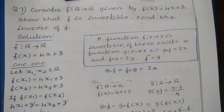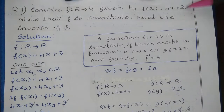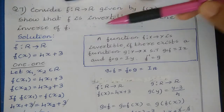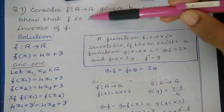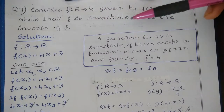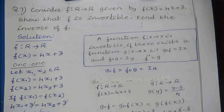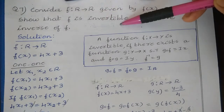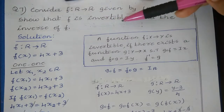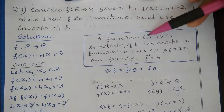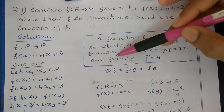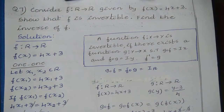Question number 7. Consider f is a function defined from R to R given by f of x is equal to 4x plus 3. Show that f is invertible and find the inverse of f. A function is invertible if it is 1-1 and onto, meaning bijective. So first we check for 1-1 and onto.